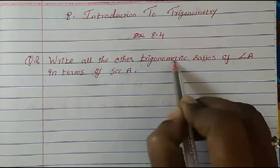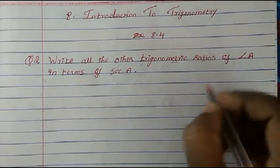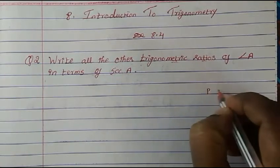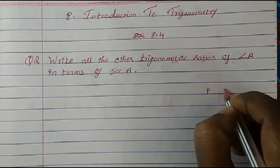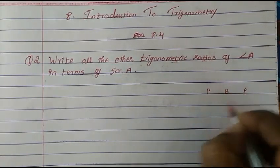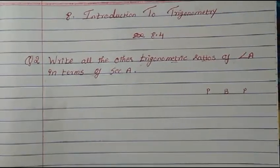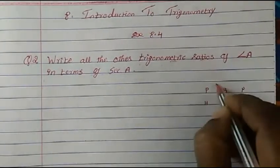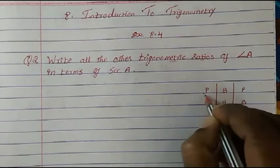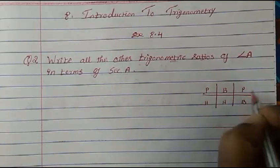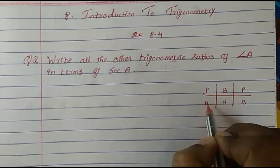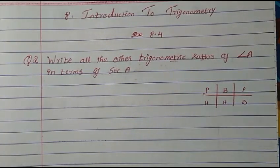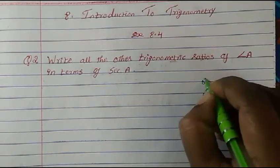So what are the trigonometric ratios? The mnemonic is 'Prince Beating Princess Horribly' — P for perpendicular, H for hypotenuse, B for base. These help us remember the trig ratios.